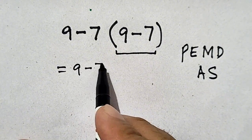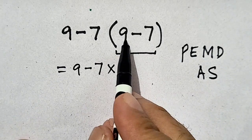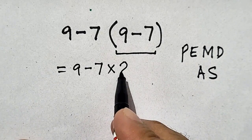Nine minus seven times, parenthesis include nine minus seven. Nine minus seven is equal to two.